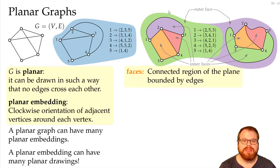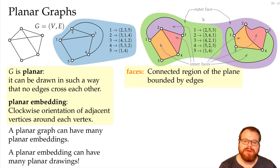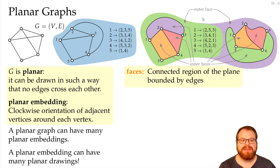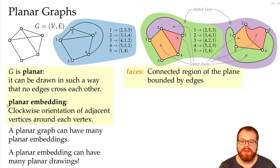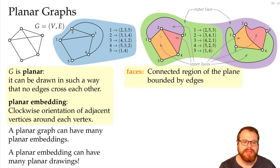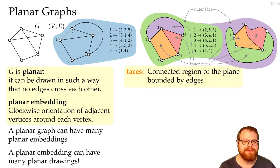All the other faces are called inner faces. To make sure that our drawings are as equivalent combinatorially as possible, we usually also specify which face will be the outer face when we specify a planar embedding. The planar embedding is defined by the clockwise orientation of adjacent vertices around a vertex. If I look at the orange face, it has a clockwise orientation of incident vertices: one, two, four, five — and this is the same in both drawings.